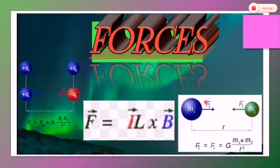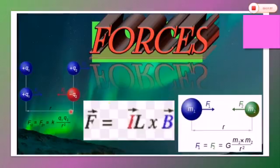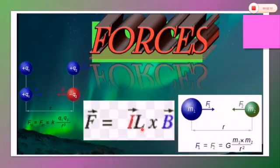Gravity g is equal to 9.8 meters per second squared. Electric field strength E is given by force per unit charge, as we studied under the electricity unit. Magnetic field strength B is equal to force divided by current and length of the conductor — the force experienced by a current-carrying conductor placed at right angles to a uniform magnetic field.